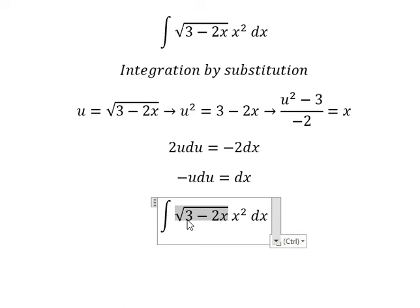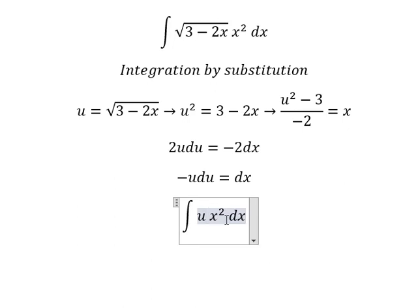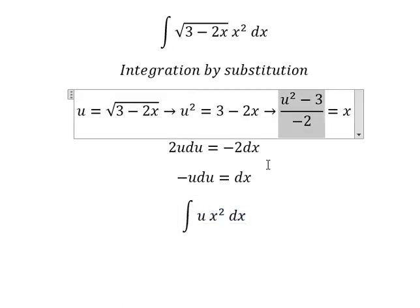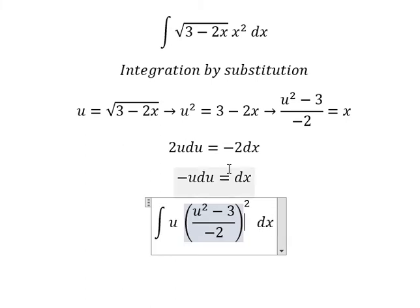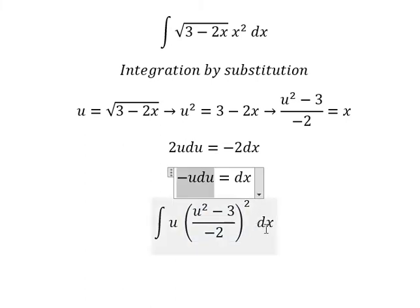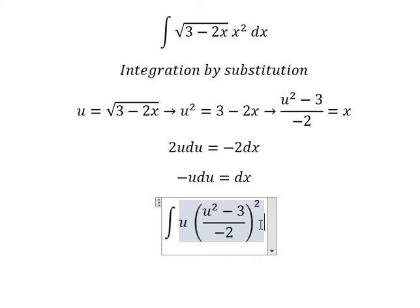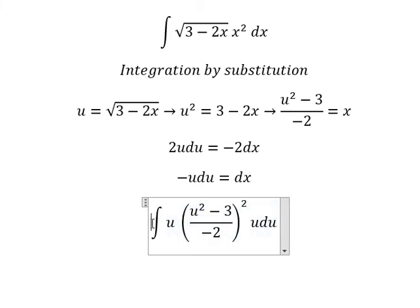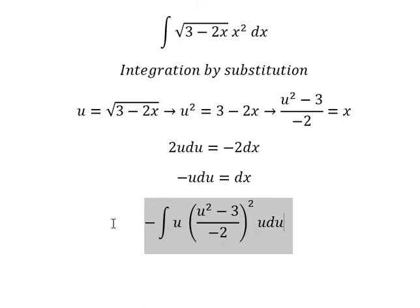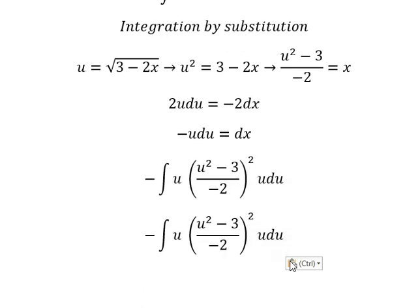The square root we change by u, x we change by this one, the dx we change by this one. So I will put the negative sign here, u and u, we have u square.